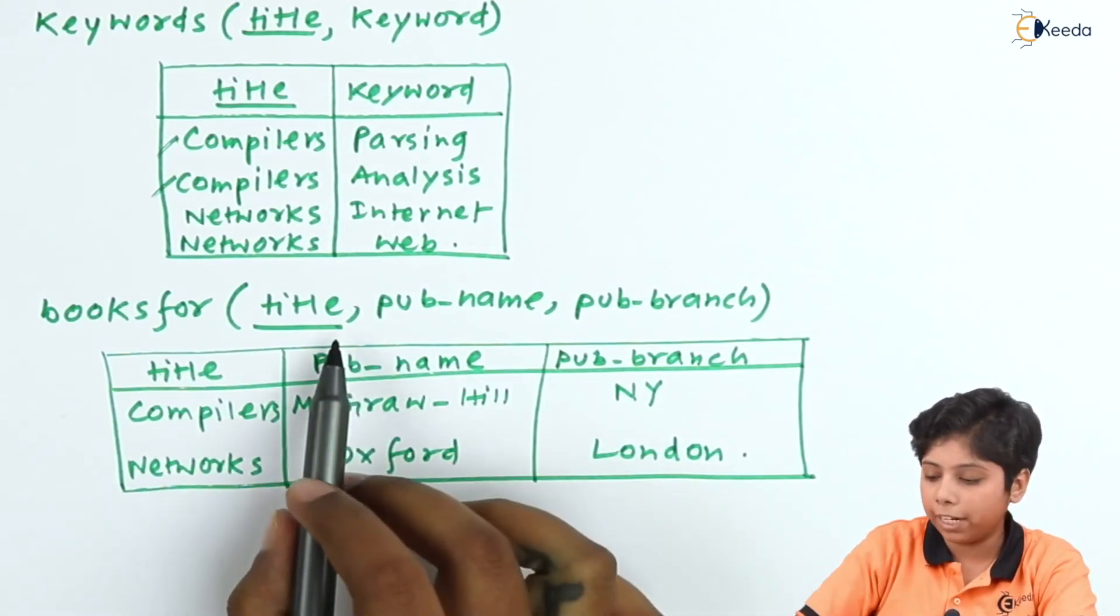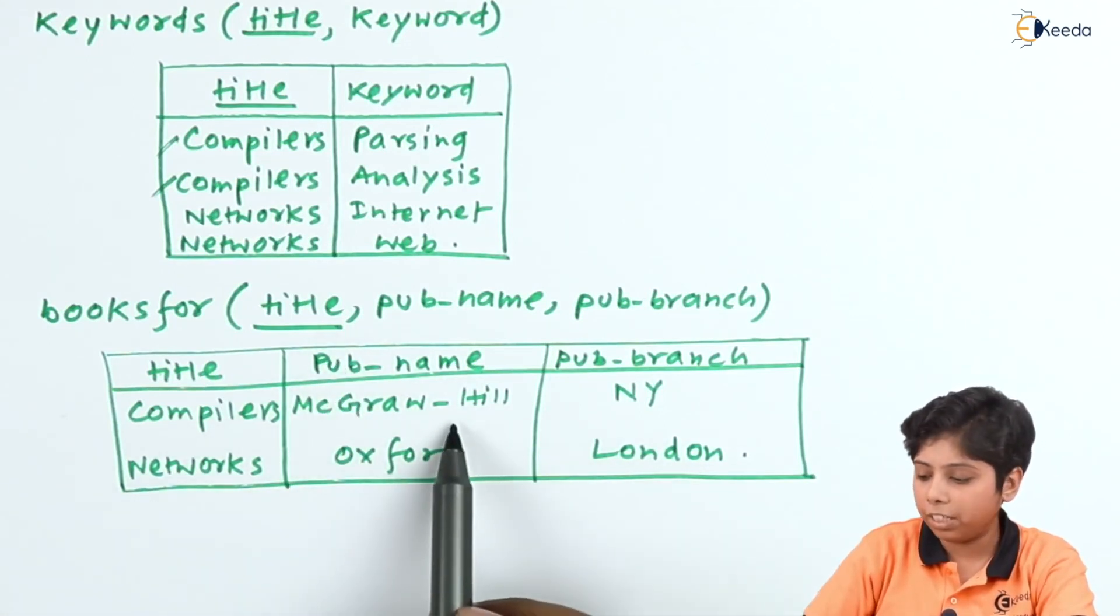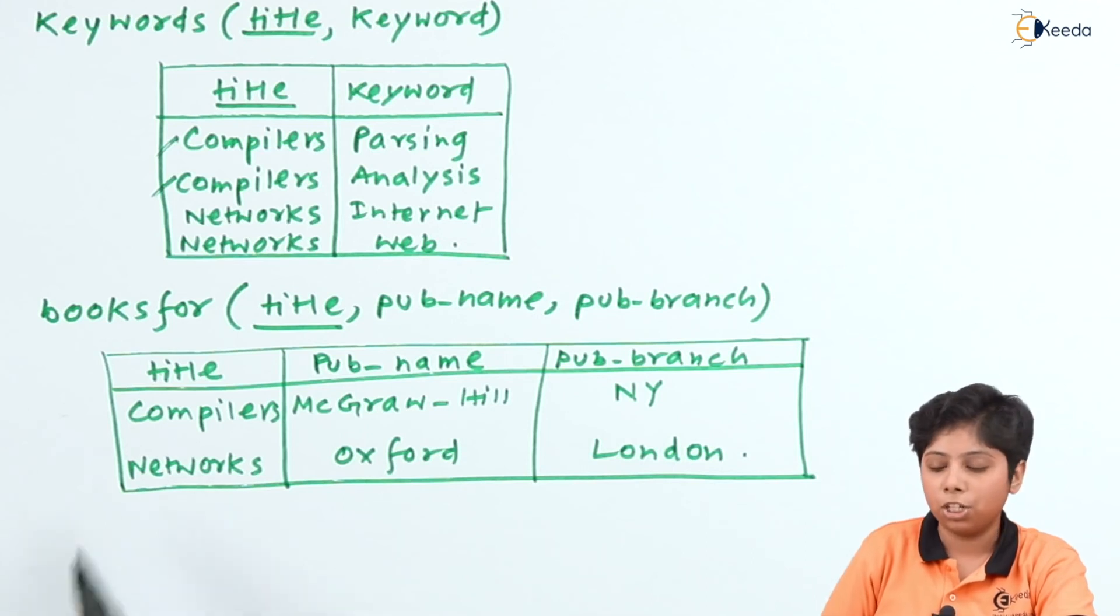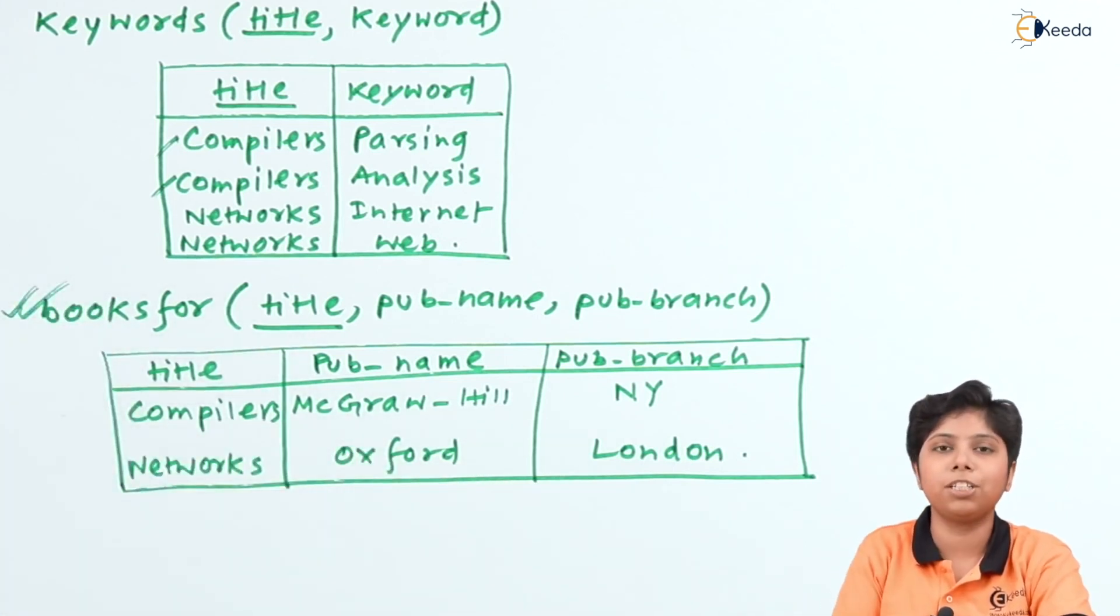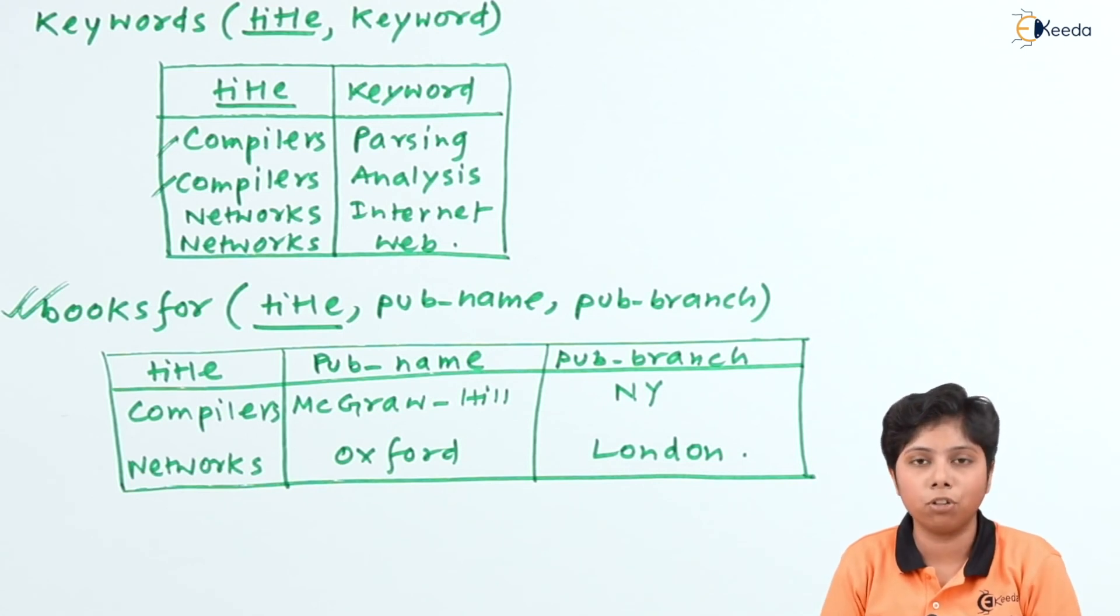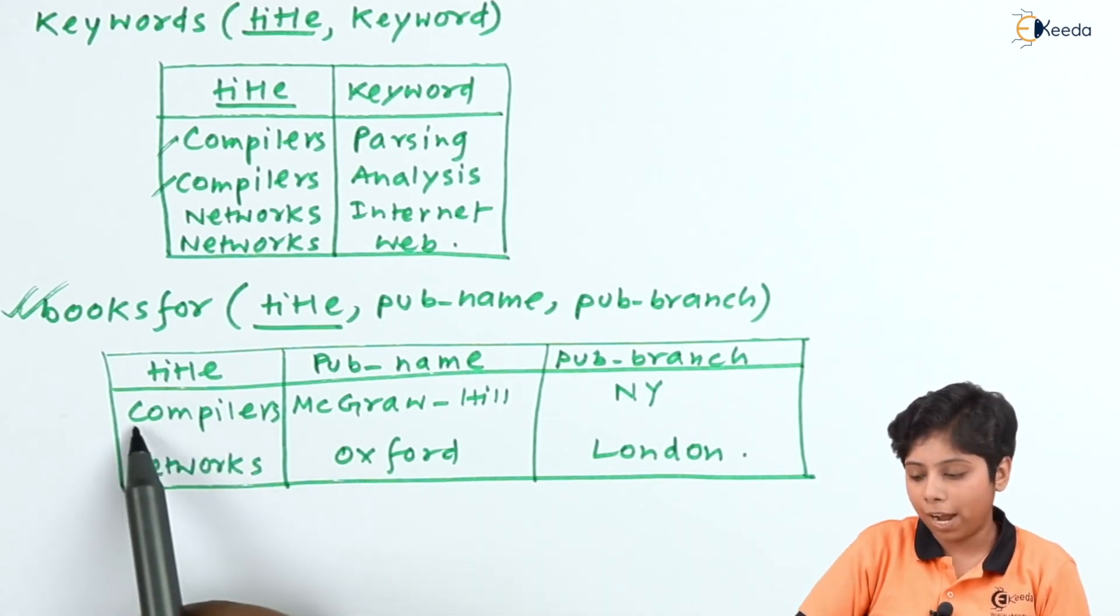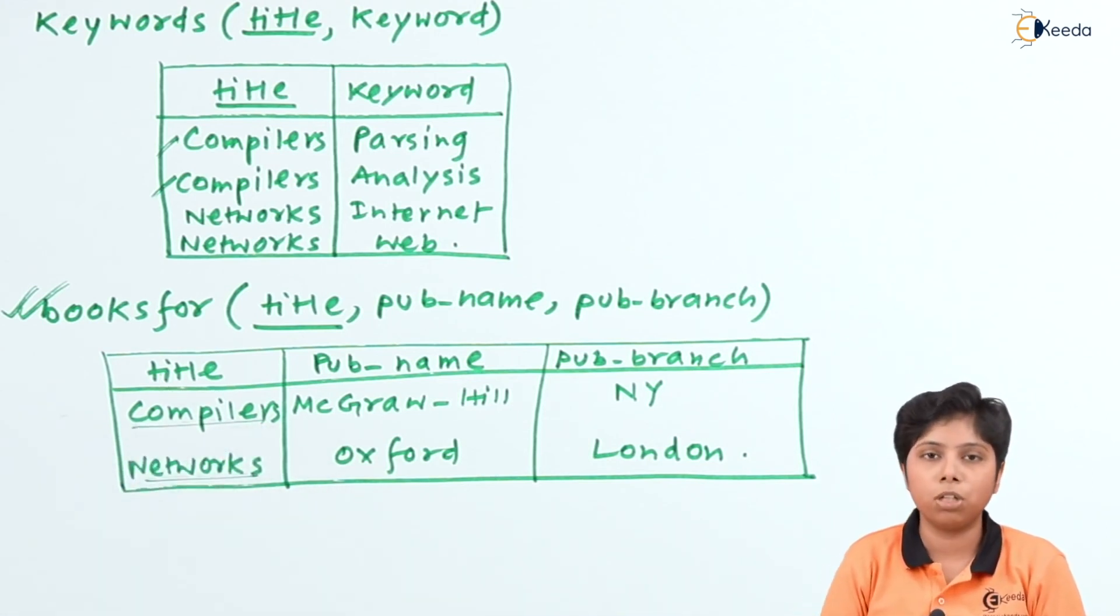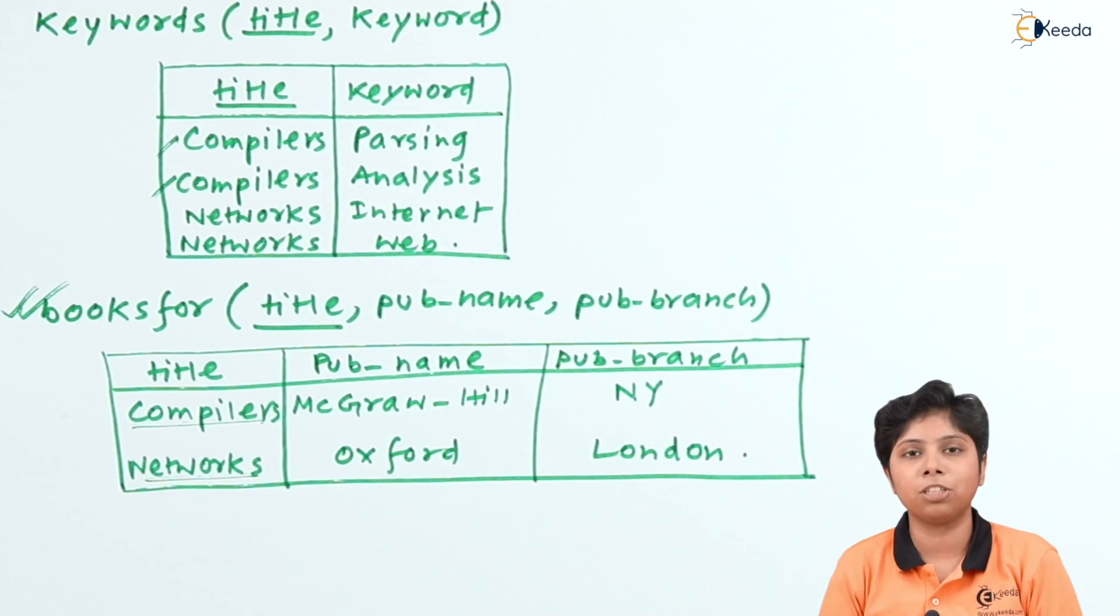So here in this relation, our title is being the primary key having the publisher name and publisher branch. So we can have this third relation as a first normal form as well as in the second, third, and fourth normal form, all of this because we are having this relation satisfying that the title being the primary key to the relation. Every book name is unique and it can provide the publication name and branch name to it.